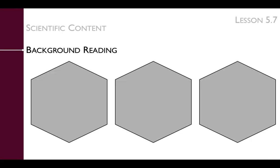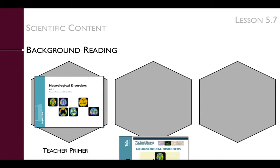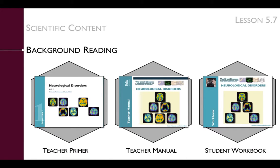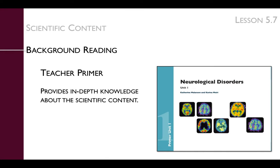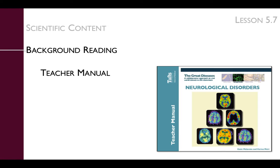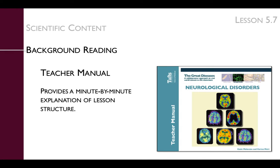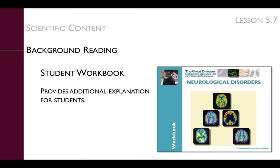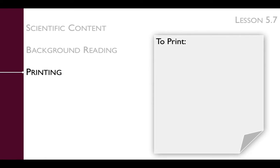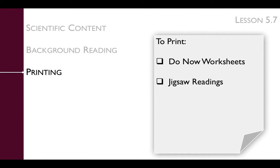You can review the scientific content in the background reading provided in the teacher primer, the teacher manual, and the student workbook. The teacher primer provides in-depth knowledge about the scientific content. The teacher manual provides a minute-by-minute explanation of lesson structure, including instructions on how to manage the discussion and activity. The student workbook provides additional explanations for your students. Be sure to print the Do Now worksheets, the jigsaw readings, and the jigsaw worksheets for your students.